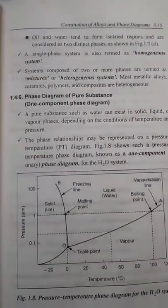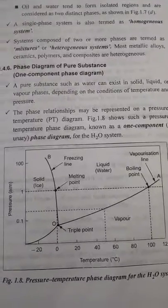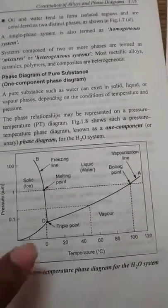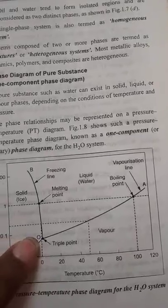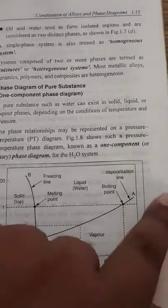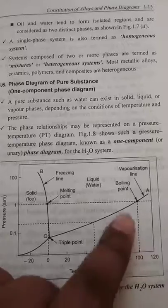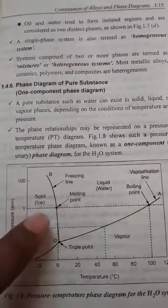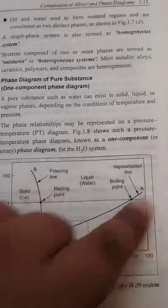Now here is a phase diagram of a pure substance — that is, a one-component phase diagram. This phase diagram is for a one-component system, which is water, since it does not have any other components. In this diagram, there is a triple point where water exists in all three forms: solid, liquid, and vapor. The freezing line and the vaporization line are labeled. At one atmospheric pressure, at 100 degrees Celsius, water reaches its boiling point and is converted into vapor above that temperature. Below that region, water exists in the form of ice.